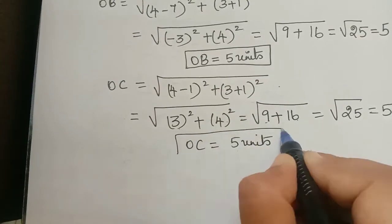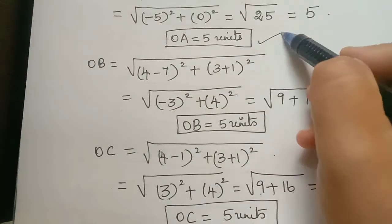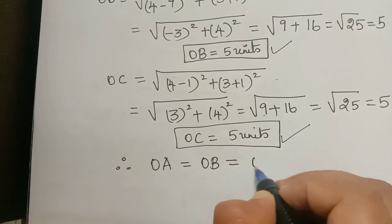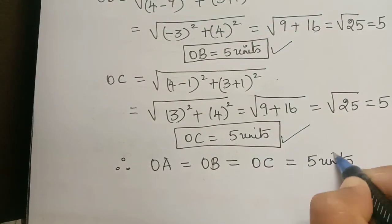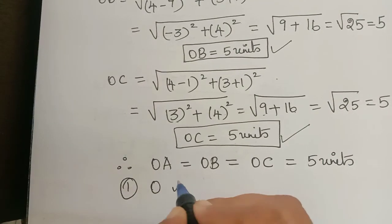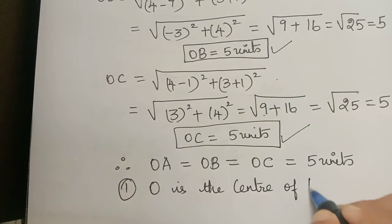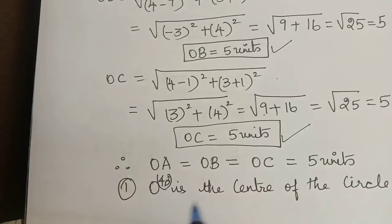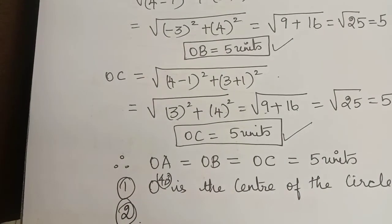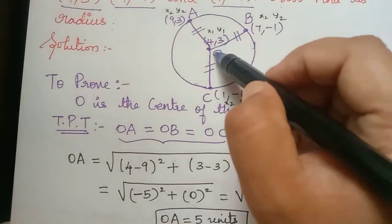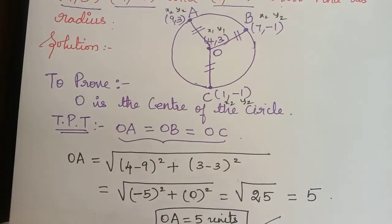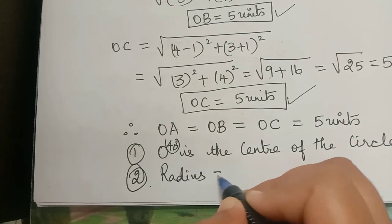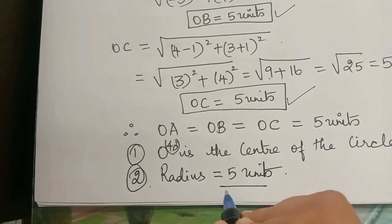Hence we have proved that OA is equal to OB is equal to OC, which is equal to 5 units. Therefore O is the center of the circle, and point O is 4 comma 3, so 4 comma 3 is the center of the circle — which is what we had to prove. Second, they asked us to find the radius; the radius is nothing but OA or OB or OC, and we have found that to be equal to 5 units. So the radius of the given circle is 5 units.